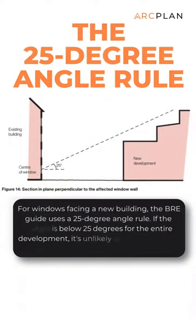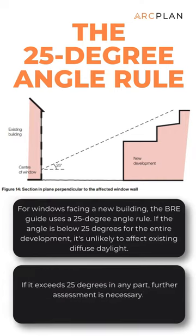For windows facing a new building, the BRE guide uses a 25 degree angle rule. If the angle is below 25 degrees for the entire development, it is unlikely to affect existing diffuse daylight. If it exceeds 25 degrees in any part, further assessment is necessary.